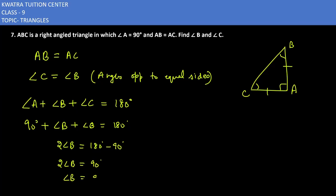And what is the measure of angle B? 90 over 2. And what is 90 over 2? It is 45 degree.